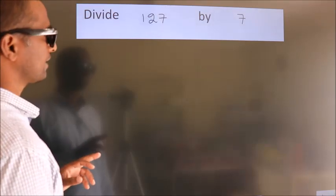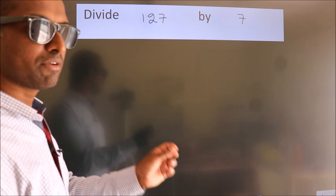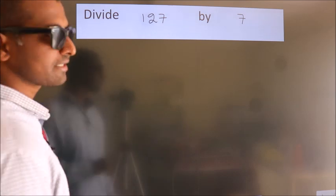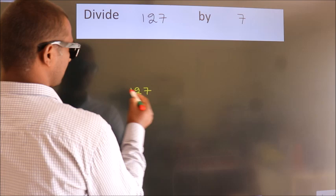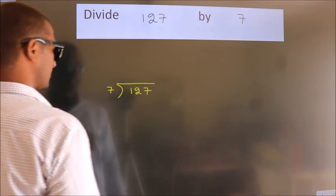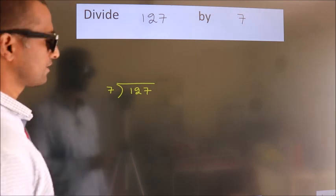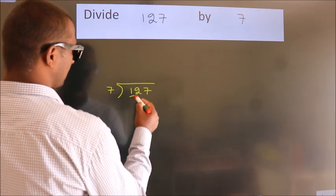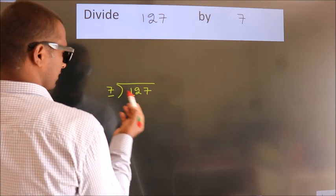Divide 127 by 7. To do this division, we should frame it in this way: 127 here, 7 here. This is your step one. Next, here we have one. One is smaller than seven, so we should take two numbers.